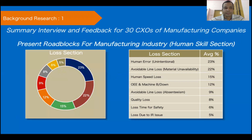Before going to the list of different topics, let me share three research studies and their outcomes — explaining why manpower cost reduction through cycle time optimization is one of the major focus areas of top managers in manufacturing companies.